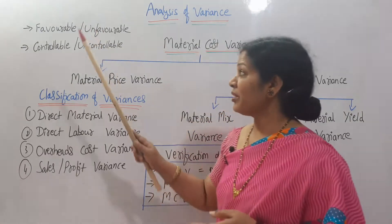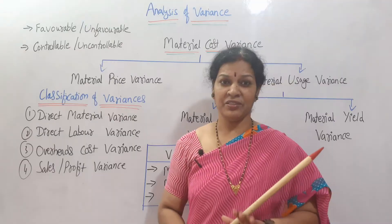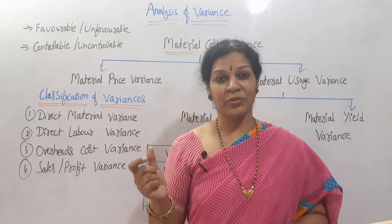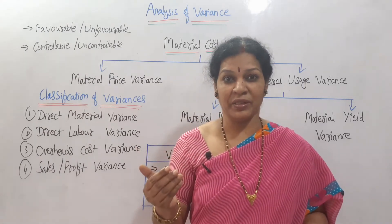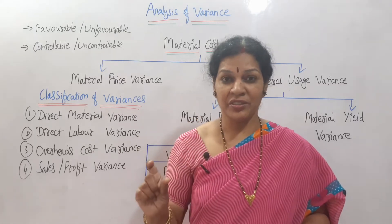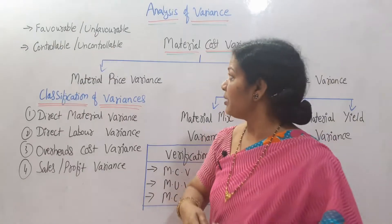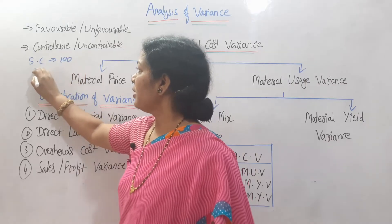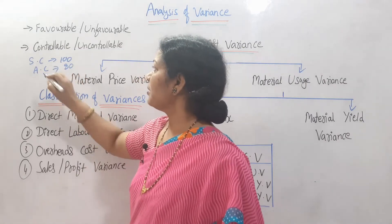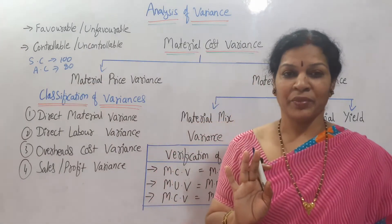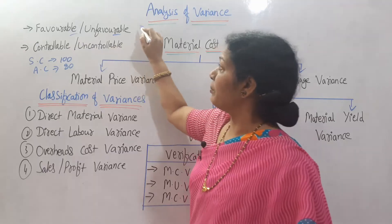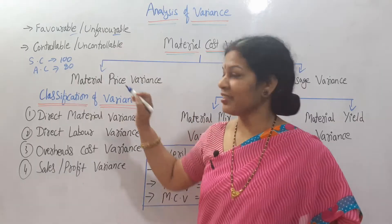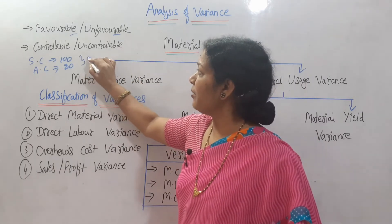An important thing in variance analysis is whether the balance is favorable or unfavorable. As discussed in the last class, standard cost is something fixed, and actual cost is what actually occurs. For example, if standard cost is 100 rupees and actual cost is 80 rupees, the difference is the variance. But whether it's favorable or unfavorable — if standard cost is more and actual cost is less, we say it is an unfavorable balance.